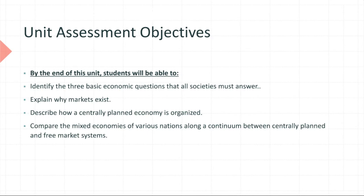We will describe how a centrally planned — meaning a governmentally planned — economy is organized. In most parts of the world, the market system is prevalent, but in the past, as you may have read in World History 1 and 2 as well as geography, the Soviet Union is one example of a centrally planned economy, where a few people are in charge of oversight for the entire nation. We will also compare the mixed, or hybrid, economies of various nations along a continuum between centrally planned and free market systems.